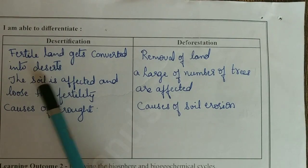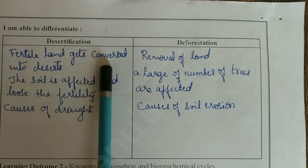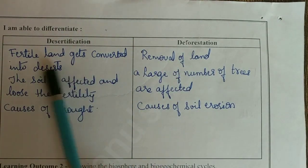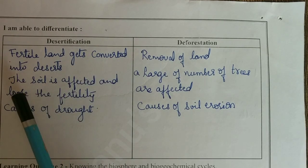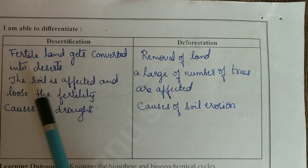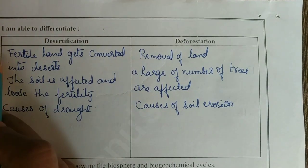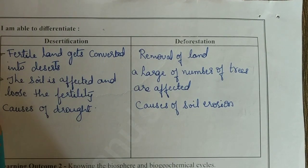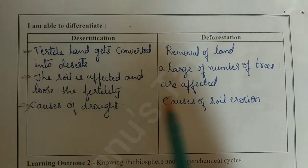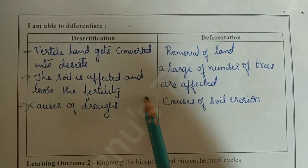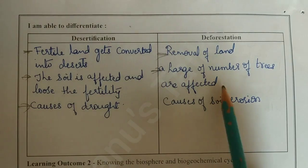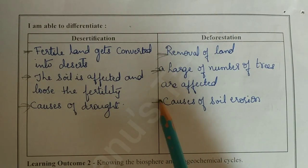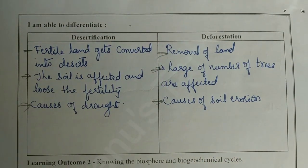Now, differentiate desertification and deforestation. Desertification: fertile land gets converted into deserts, the soil is affected and loses fertility, and causes drought. Deforestation: removal of land — a large number of trees are affected — and causes soil erosion.